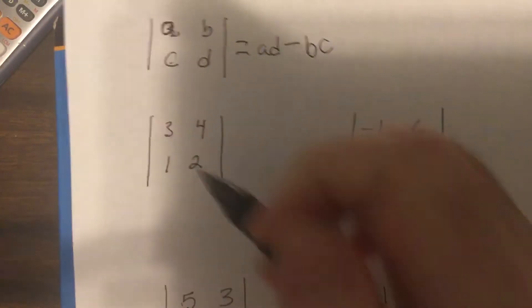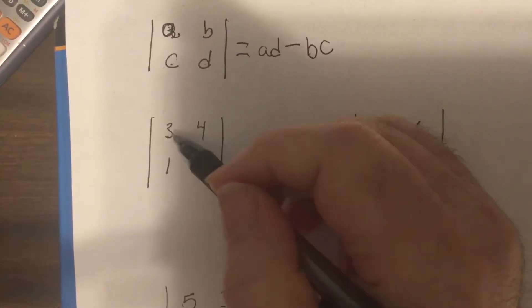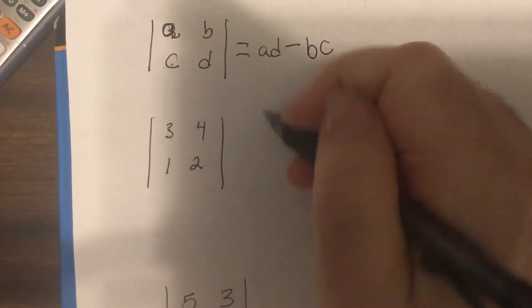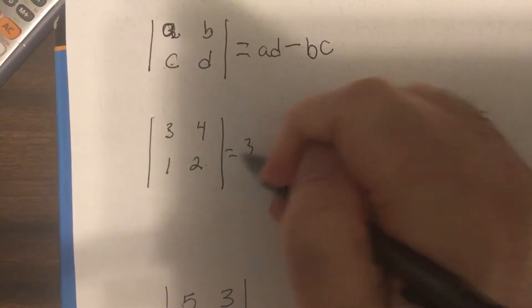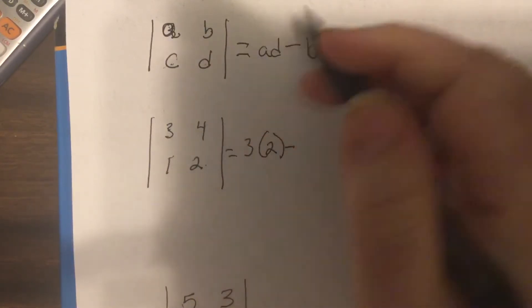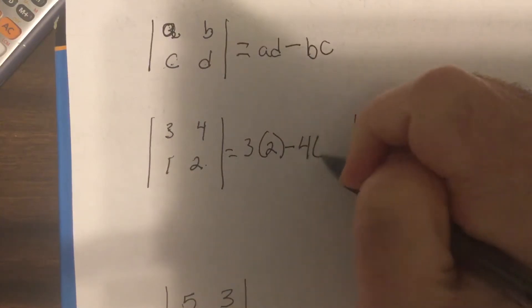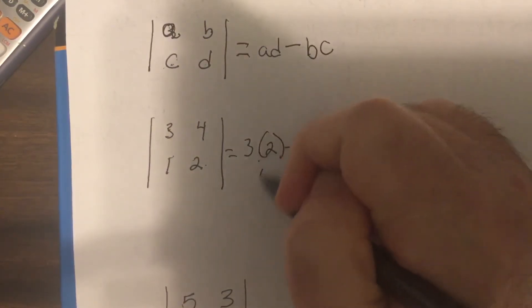So if I said what's the determinant of this, you would say 3 times 2 minus 4 times 1. So that would be 6 minus 4, which is 2.